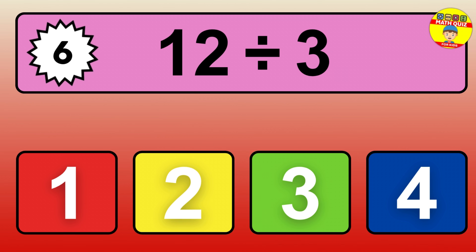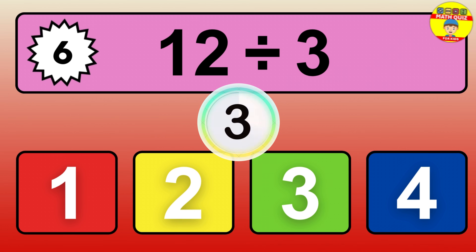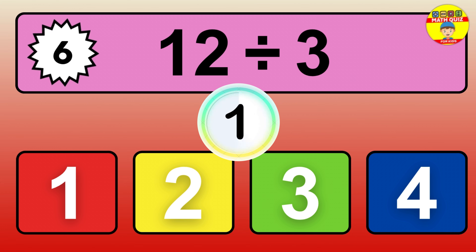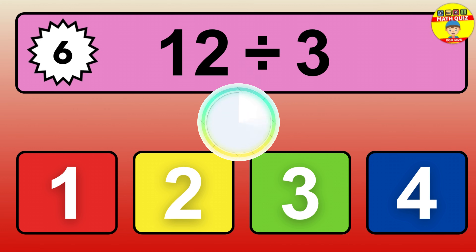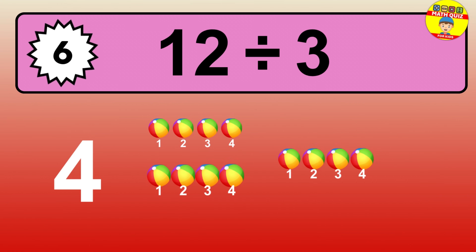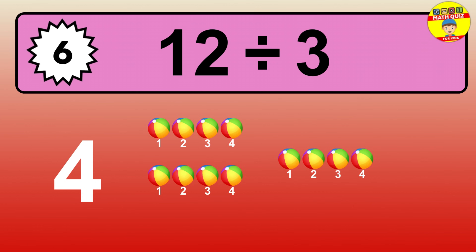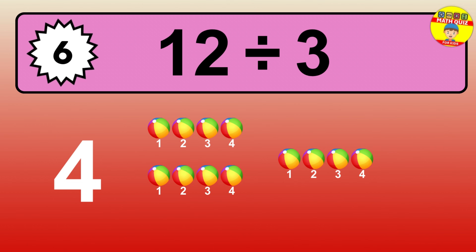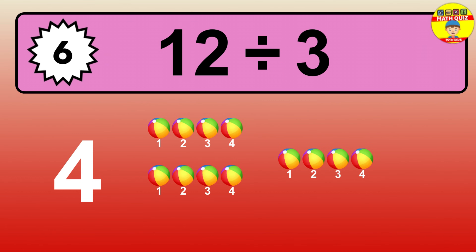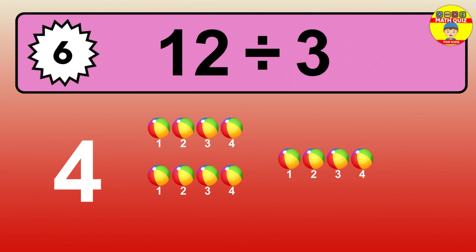12 divided by 3 is… time to think. Let's go to the solution. Divide the number 12 by 3. Each group contains 3 units, so dividing 12 by 3 results in 4 equal groups. Thus, the result is… 12 divided by 3 equals 4.